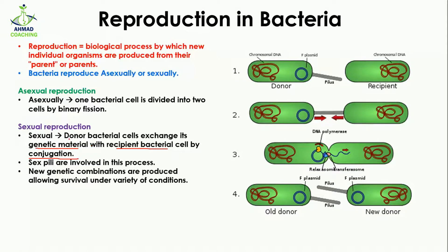The donor bacterial cell gives and the recipient bacterial cell receives the genetic material. For this purpose, sex pili are involved. The conjugation process results in new genetic combinations which help in the survival of bacteria under a variety of conditions.